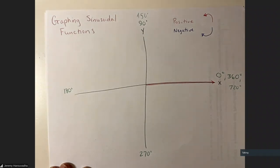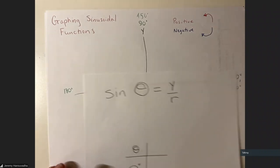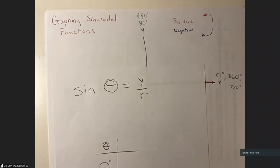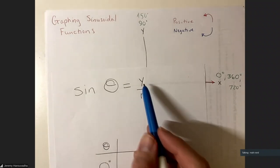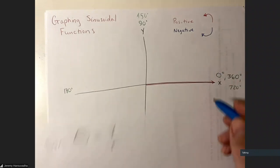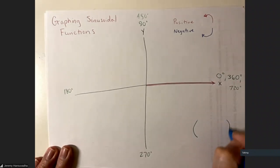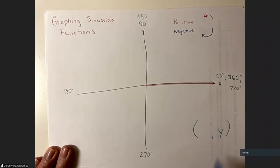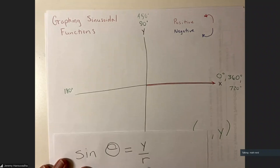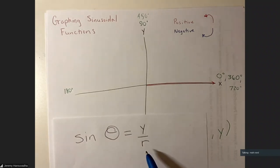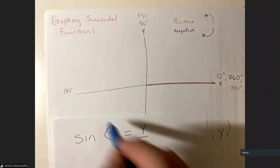That's how angles work in this new coordinate setting. The new coordinate definition of sine — sine used to be opposite over hypotenuse — but the new definition is that sine is the y-coordinate, as in the point (x, y), divided by r, where r is like the radius of a circle.